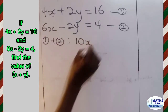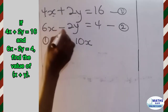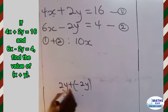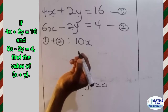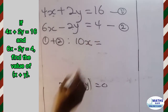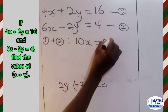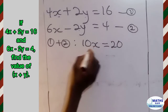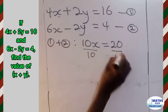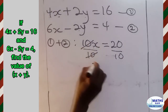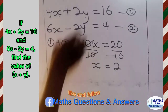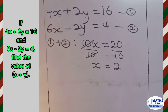Adding the equations: 4x plus 6x gives us 10x. For the y terms, 2y plus negative 2y gives us 0, so y is eliminated. On the right side, 16 plus 4 gives us 20. So we have 10x equal to 20. Dividing both sides by 10, x equals 20 divided by 10, which is 2. The value of x is 2.